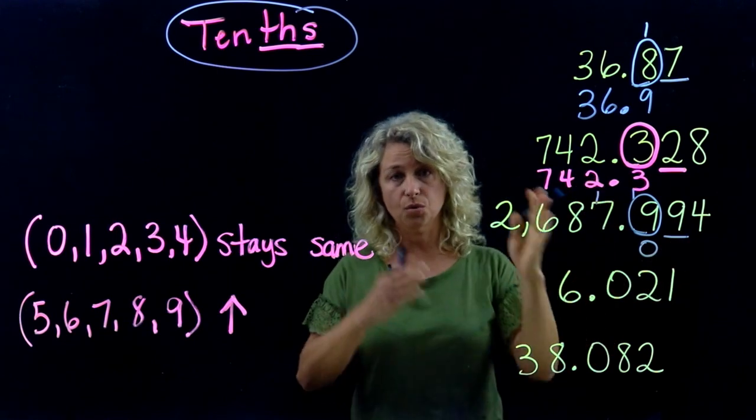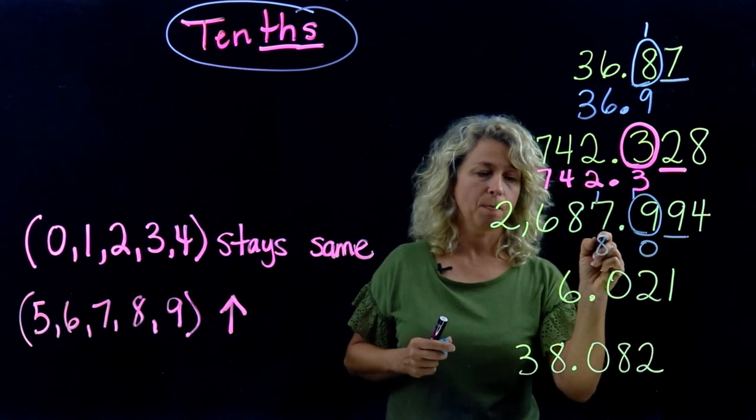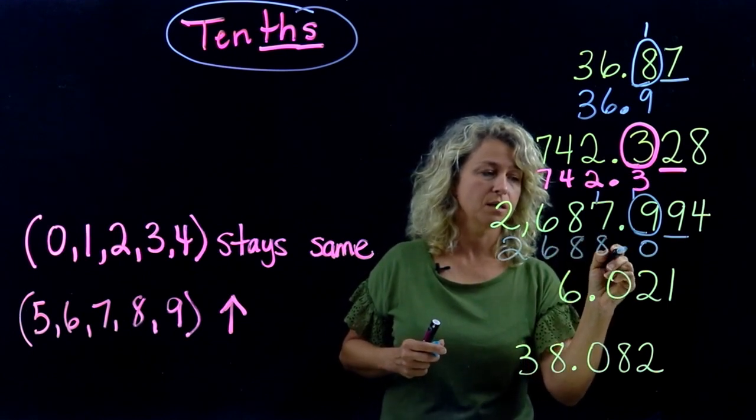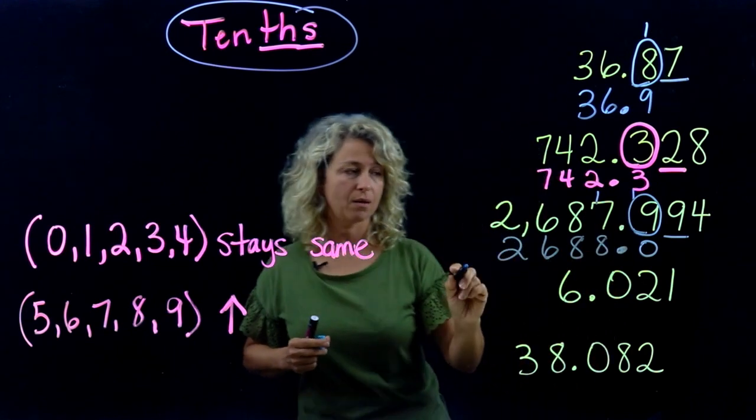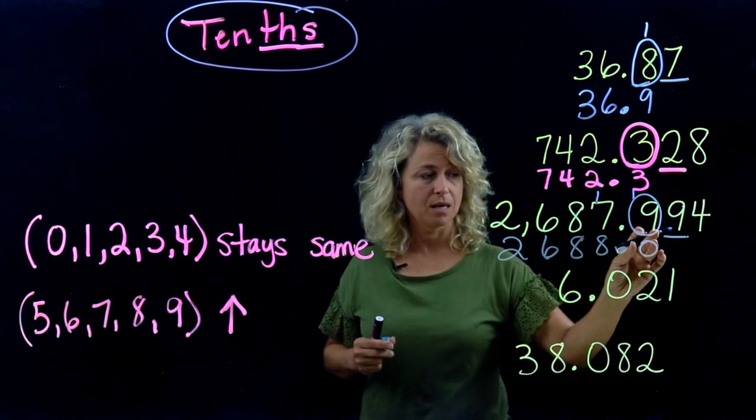Now just bring the other numbers down. Don't forget to bring that decimal down. Leave this because it's a zero in the tenths place, so we have rounded to the tenths place.